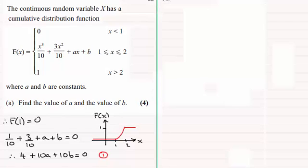We need our second equation next and that comes from doing f(2). f(2) remember equals 1. So if we substitute x equals 2 into here we're going to have 2³ which is 8, so we're going to have 8/10.